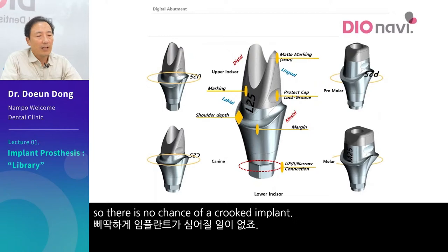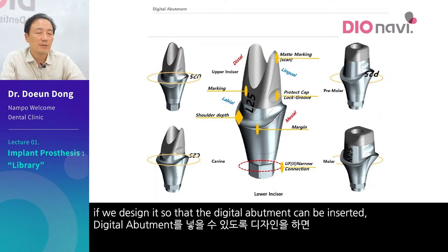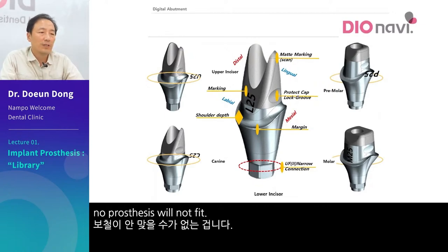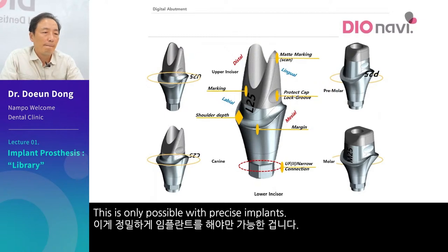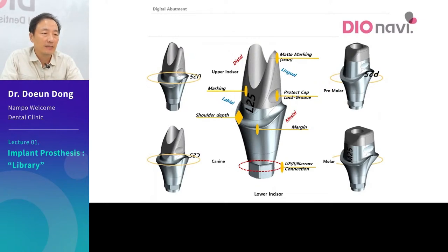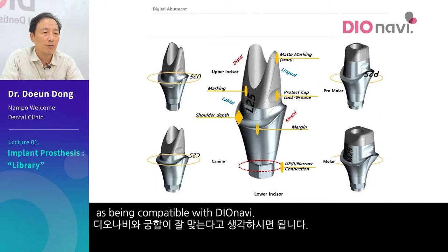So there is no chance of a crooked implant. Since it was placed in the way we desired, if we design it so that the digital abutment can be inserted, no prosthesis will not fit. This is only possible with precise implants. So we can think of digital abutment as being compatible with DIOnavi.